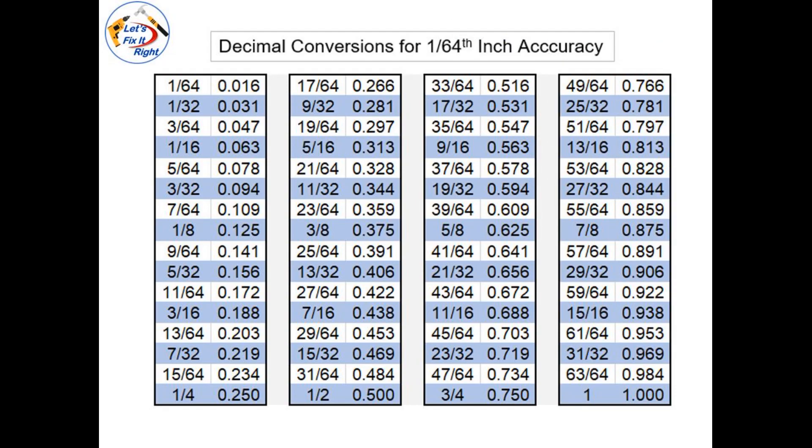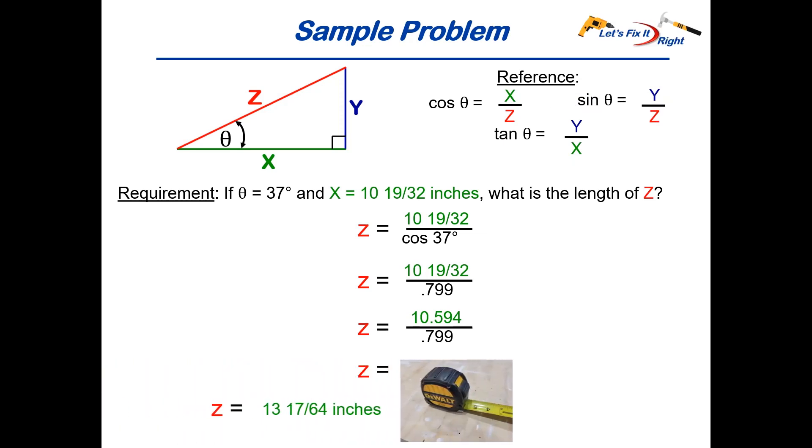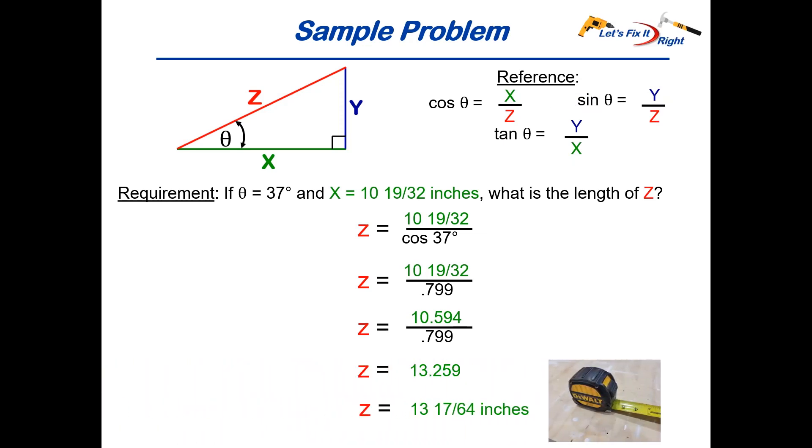Looking this value up on our let's fix it right conversion table, we see that 0.259 is closest to 17/64. So our final answer which can be used with our shop tape measure is 13 and 17/64 of an inch.